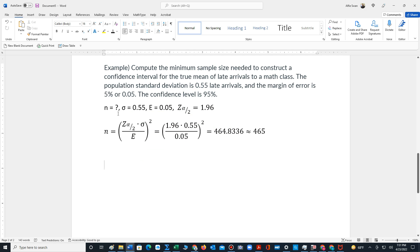The formula we use to calculate the minimum sample size is n equals z sub alpha over 2 times sigma divided by e, quantity squared. We plug the values into the formula and calculate.